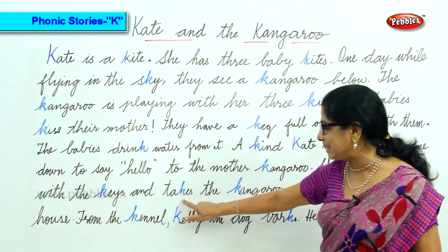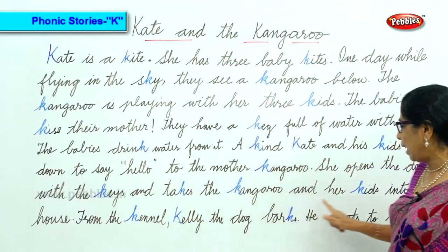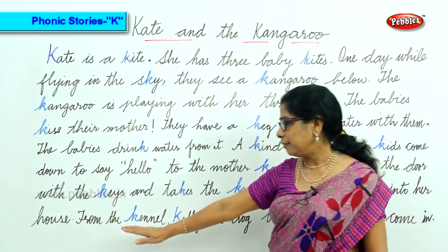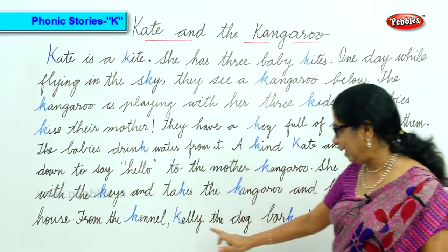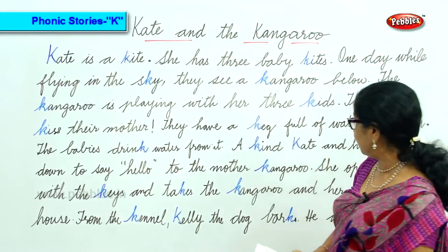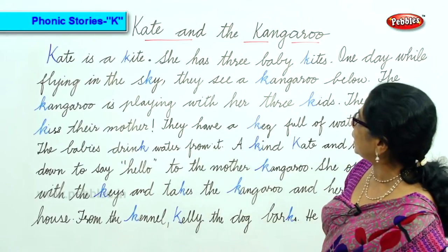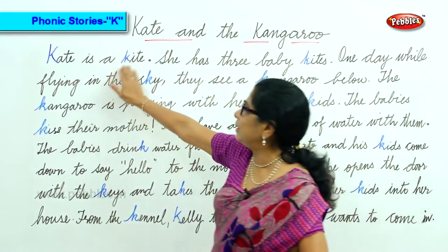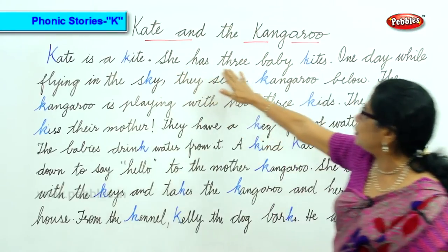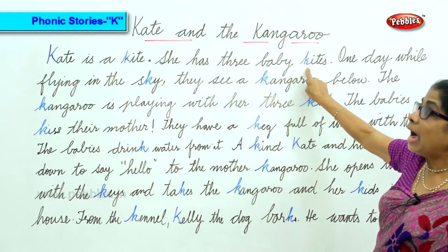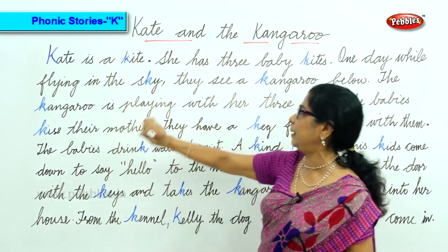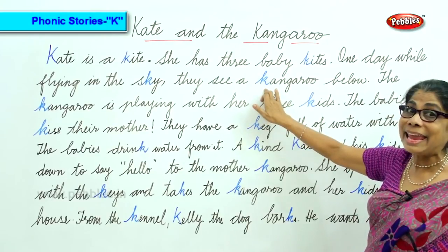A kind Kate and her kids come down to say hello to the mother kangaroo. She opens the door with the keys and takes the kangaroo and her kids into her house. From the kennel, Kelly the dog barks — he wants to come in.